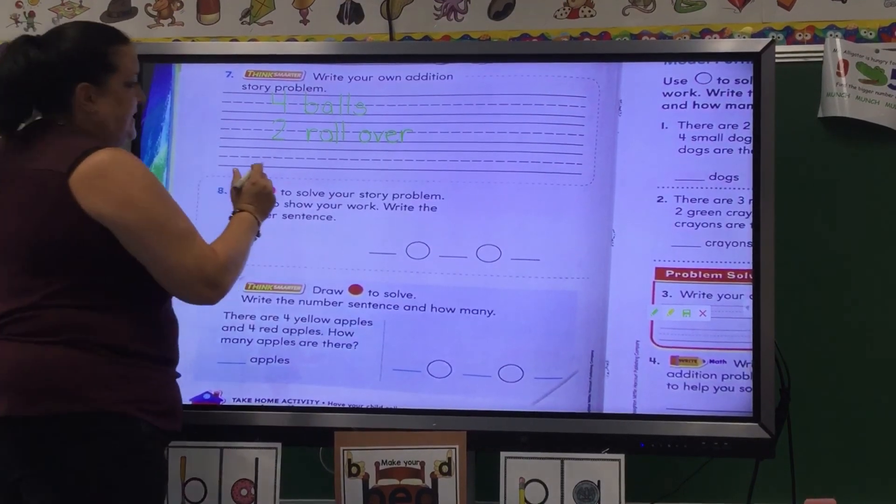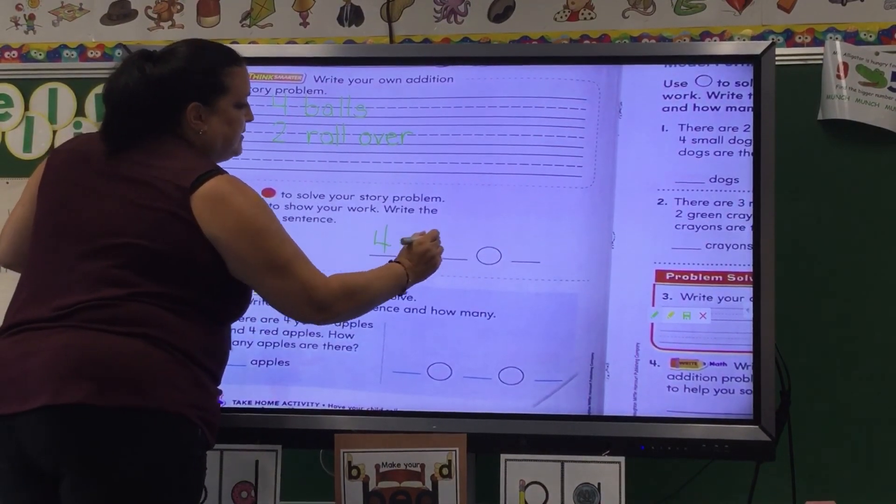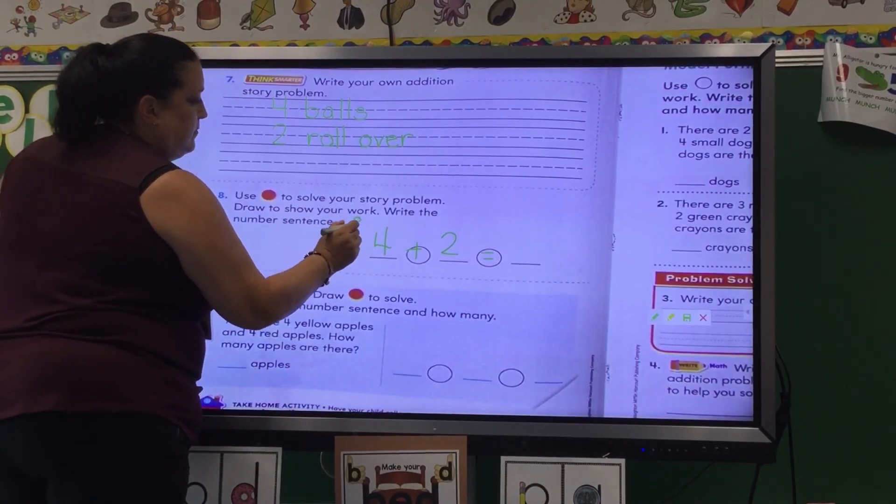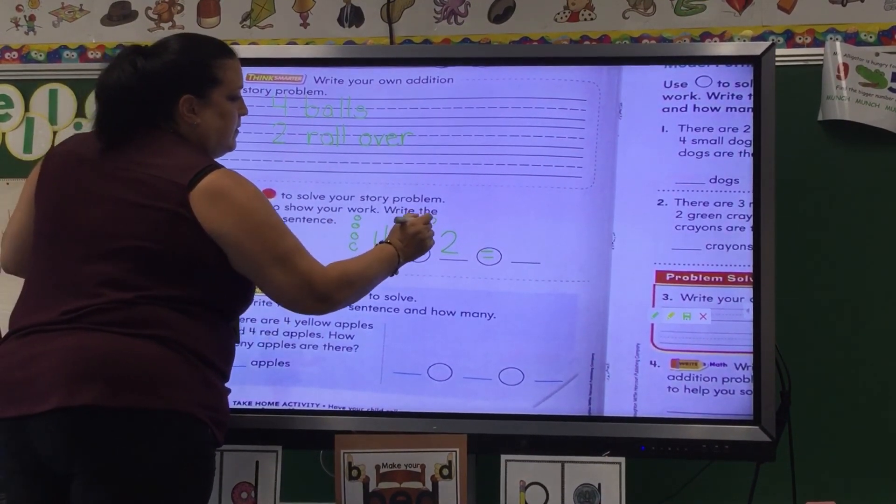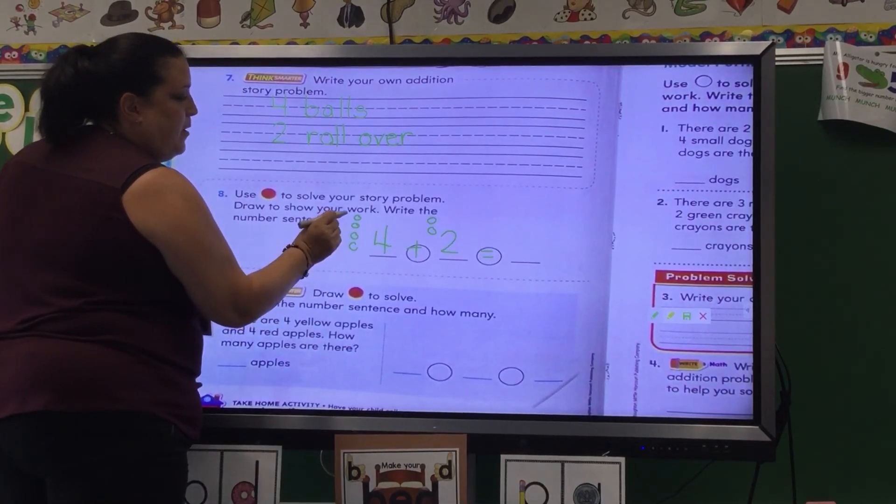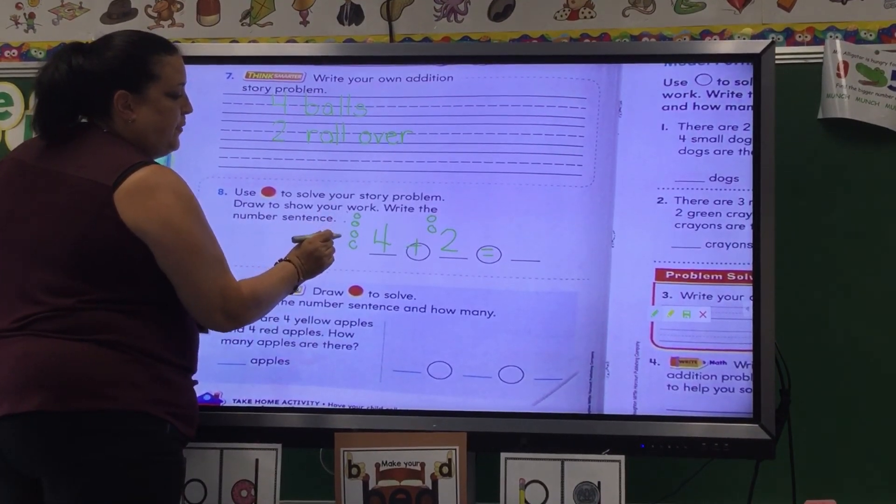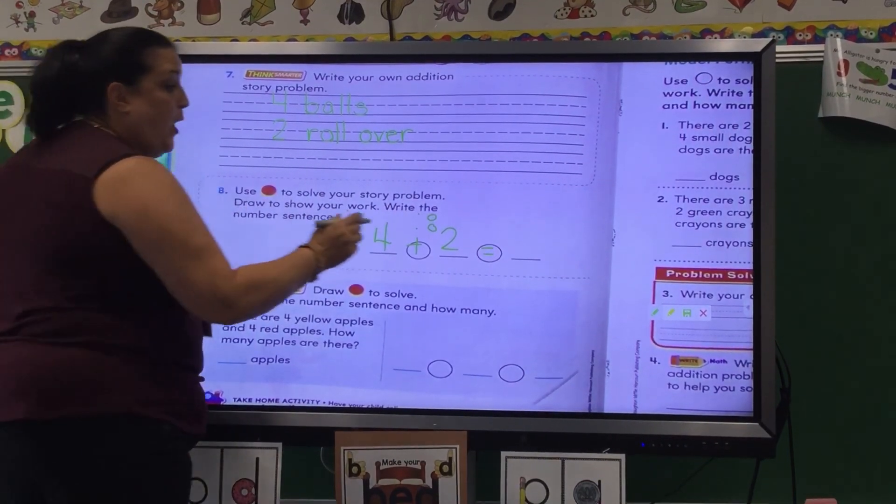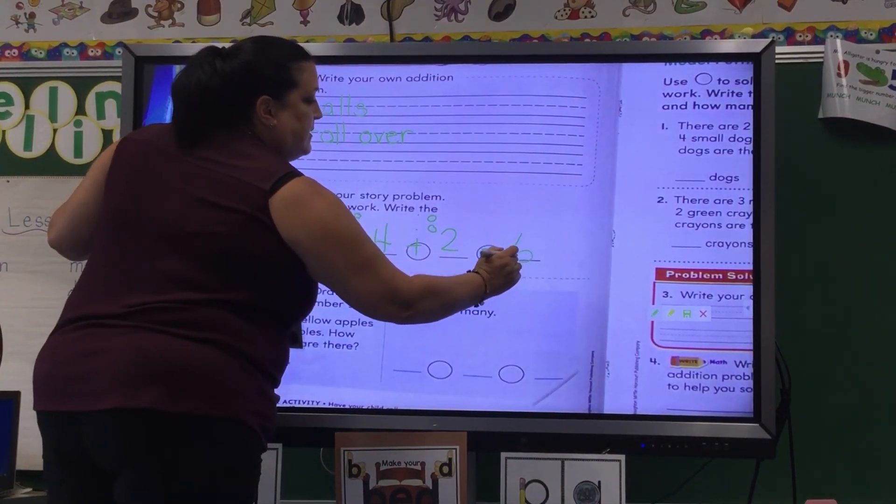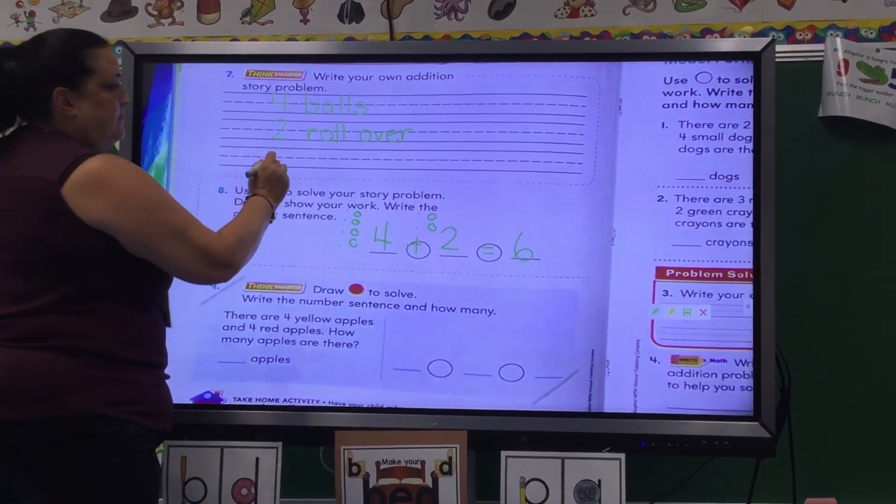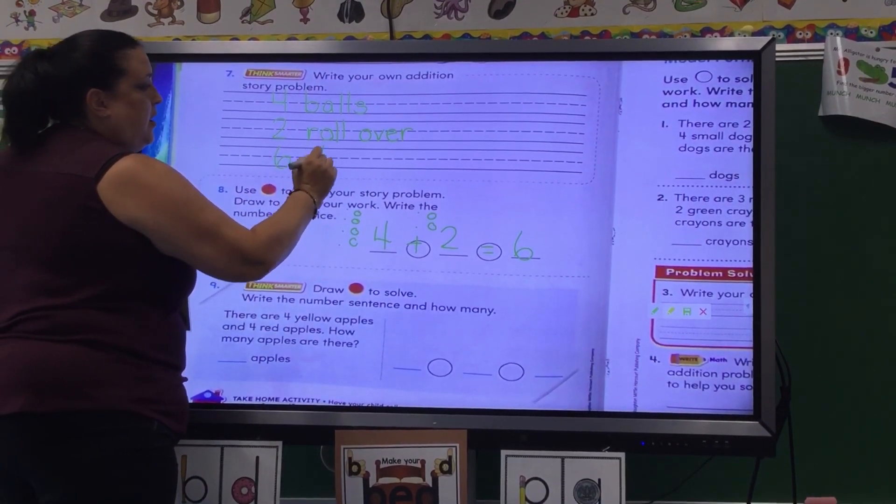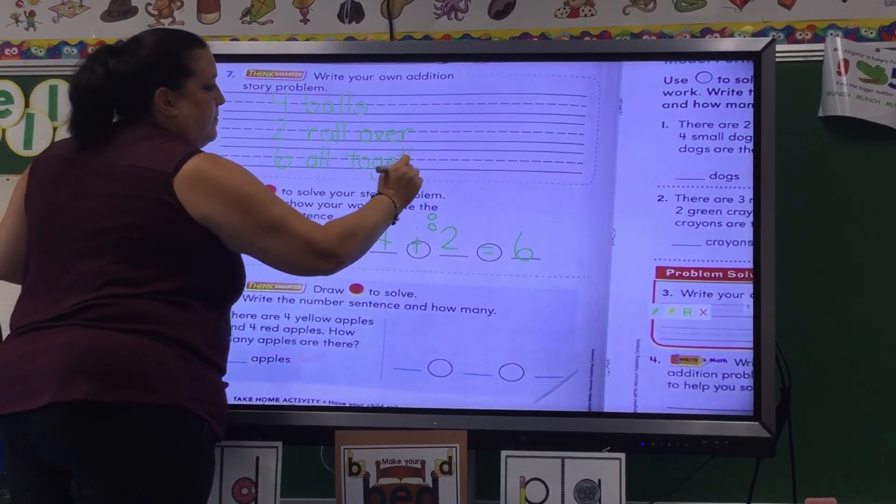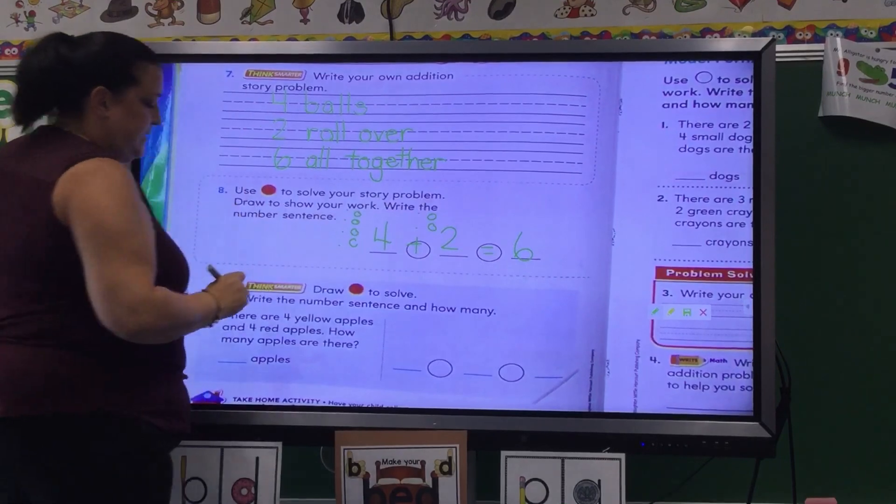So let's see. I had four plus two equals. And I can draw. Count with me. One, two, three, four, five, six. If I'm going too fast for you, you can pause. Six. Six all together. Four plus two equals six.